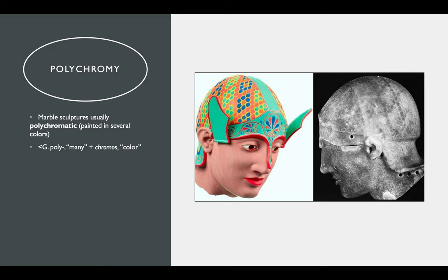Many of these marble statues were actually painted — that technique is called polychromy, meaning 'many colors,' from the Greek prefix for 'many' and chromos, the word for color. One reason people didn't know about it for so long is that much of the paint had been wiped away over time. Statues looked white when they came out of the ground, but with technology, scholars were able to see traces of the original paint left on many sculptures. You can see a pattern of some kind of design on the helmet of this particular statue. I have a video from the British Museum of scholars studying the relief sculptures that were on the Parthenon.